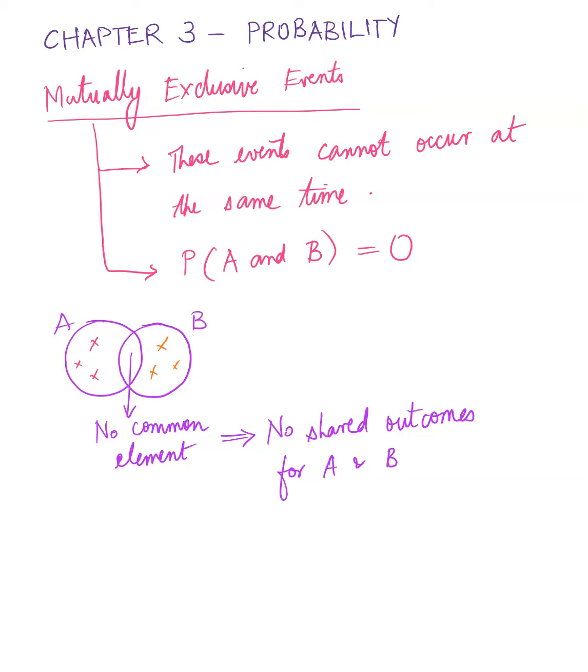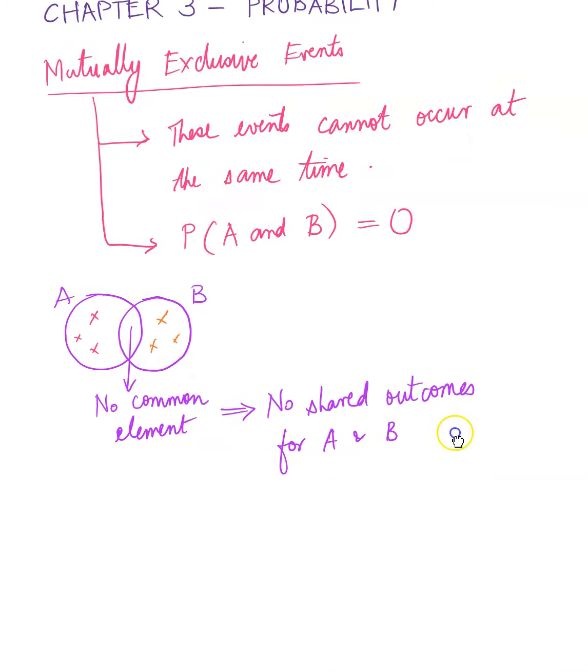Now, how do we know if it is mutually exclusive or not? If it is not explicitly stated to us, then you have to assume that they are not until you can show it otherwise. So we'll take a look at an example here.